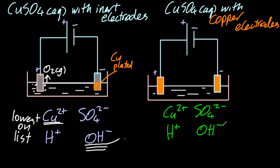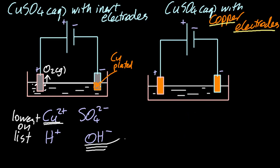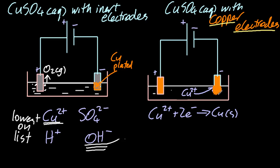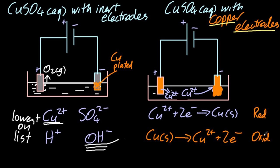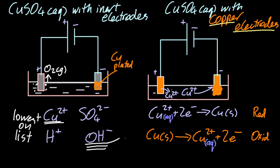Now the active electrode case is a special case you just have to learn. In the solution, Cu²⁺ is attracted to the negative electrode and gets copper plated. At the positive electrode, copper turns to Cu²⁺. So one electrode gets bigger and one gets smaller. You might want to use the words reduction and oxidation here. As for the color of the solution: as Cu²⁺ is being added to the solution at one electrode and removed at the other, the color remains the same.